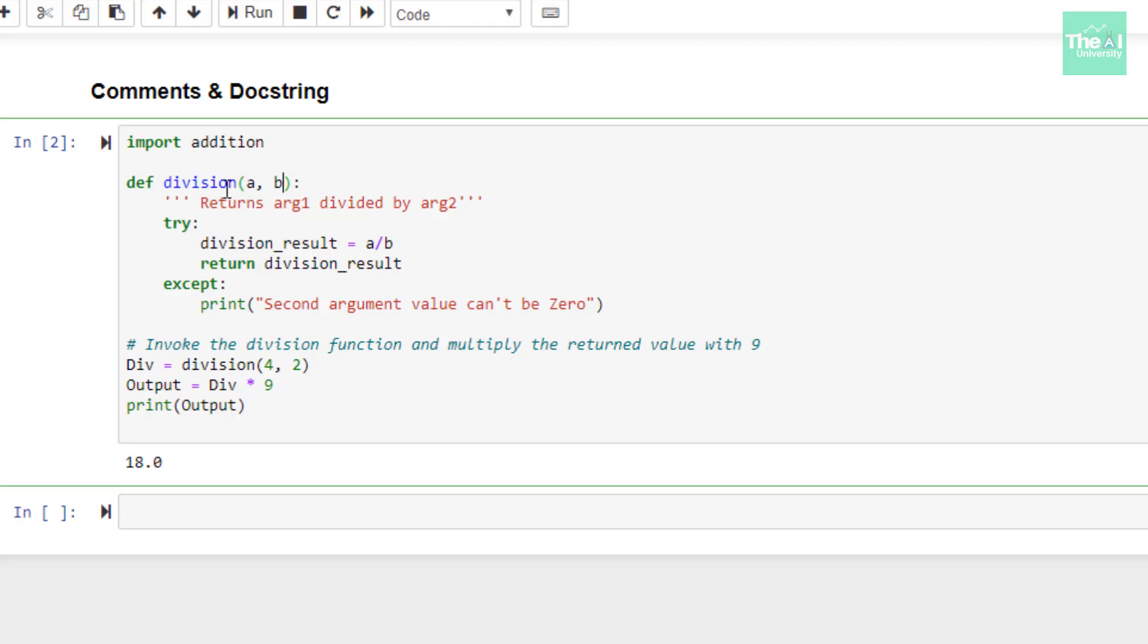So it's self-explanatory. Had I kept its name as my function instead of division, then you wouldn't be able to figure out what this function is intended for. So this is the way we can provide a very meaningful name to our functions and variables.